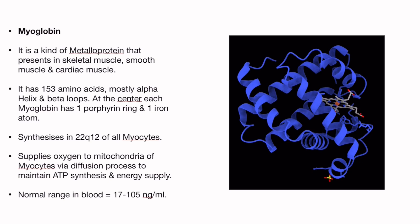Myoglobin consists of 153 amino acids, mostly alpha helix and beta loops. At the center of each myoglobin, there is one porphyrin ring and one iron atom.